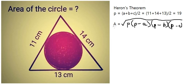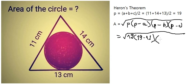So we put the numbers in here and we got 19 minus 11, the next one is 19 minus 14, and 19 minus 13. After we put the numbers in here, we got 4 times the square root of 285.